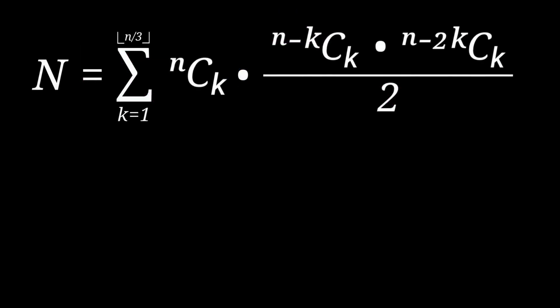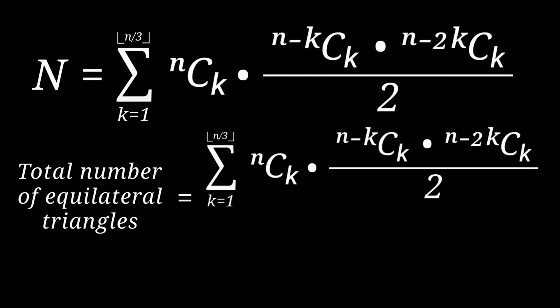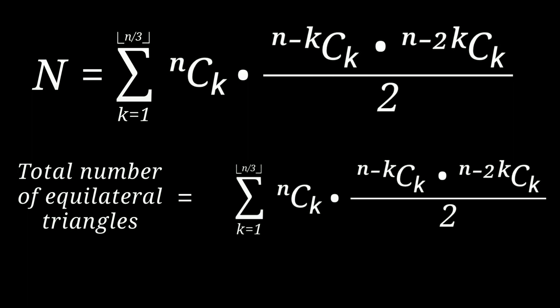And now if we add this expression as k varies over all the values which it can take, we get the value of N and from there we simply get the total number of equilateral triangles and we have solved the question.